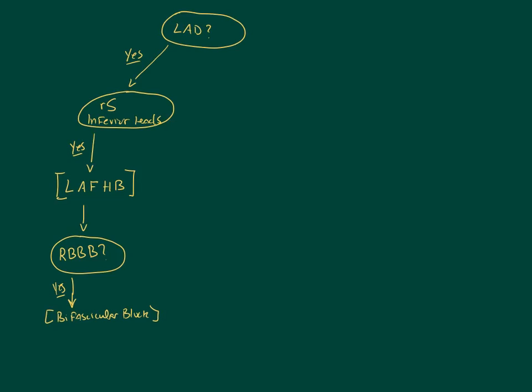And then the final question that we need to ask ourselves is, is there any form of AV block? Is there any form of AV block going on? First degree, second degree, type 1, type 2, third degree. If there is, then I in fact have a trifascicular block.